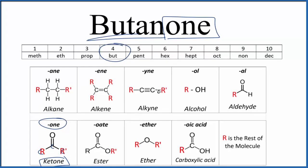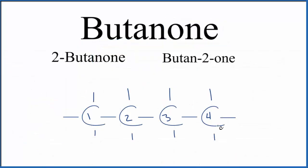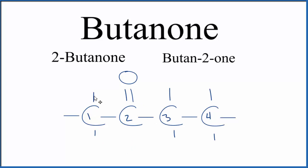Let's look at a chain of four carbons. Here's our chain of four carbons, and we need to put a double-bonded oxygen on one of these carbons. We could put it right here — because each carbon can only have four bonds, we count one, two, three, four, five, and we'd need to get rid of one of the hydrogens. These lines are going to hydrogen, so this carbon doesn't have any hydrogen atoms on it.